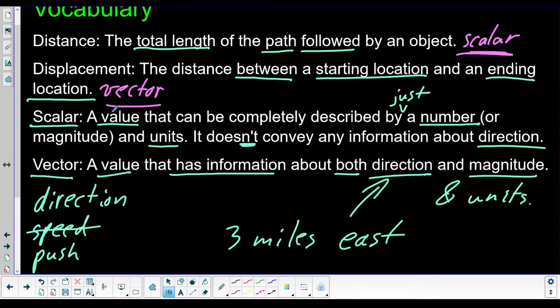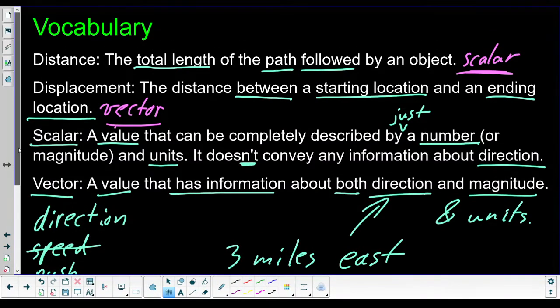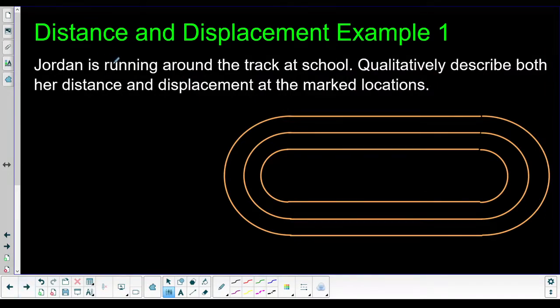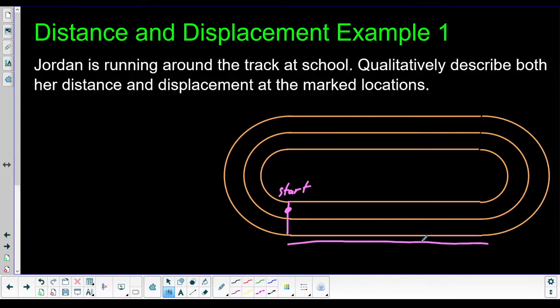Let's look at distance and displacement example one. Jordan is running on track at school. Qualitatively describe both her distance and displacement at the marked locations. Qualitative means without numbers. It means we need to talk about things as specifically as we can, but we're not going to worry about exact measurements. This is a high school track. The straight is 100 meters, the curve is 100 meters.